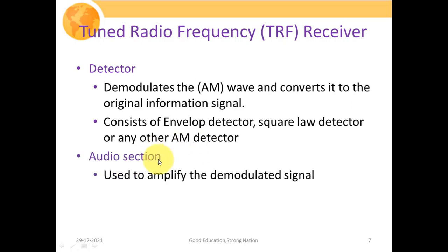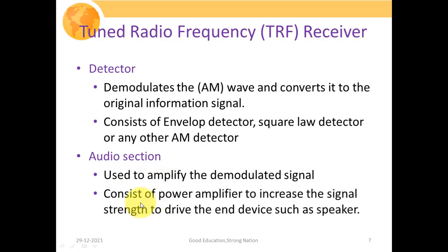The third stage is the audio stage, used to amplify the demodulated signal. The detector converts the modulated signal into the original information signal, but the strength of that signal is quite low. In order to drive the end device — such as a speaker — we need to amplify the signal to the optimum level. So the audio section will generally comprise a power amplifier, which boosts the signal strength to run the speaker properly.